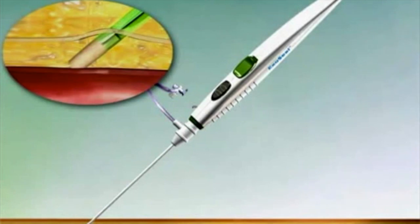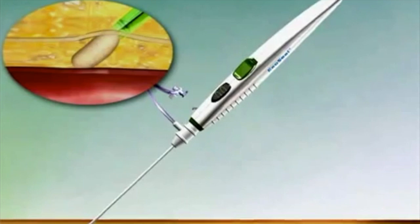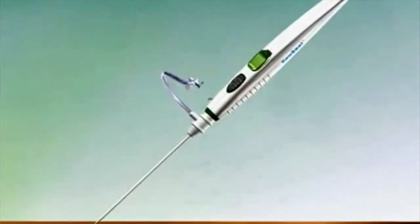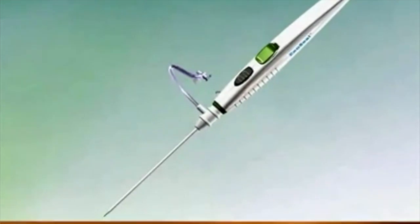Retract the ExoSeal vascular closure device and the vascular sheath until the device is completely removed from the patient and apply light pressure to the wound site for two minutes. Evaluate for hemostasis and apply a light pressure dressing to the puncture site.